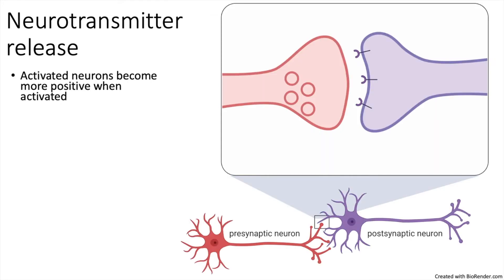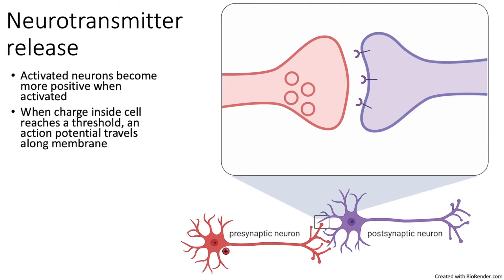Before I describe how this works, I'll give a bit of background starting with the mechanism by which neurons release neurotransmitters. When neurons are not active, they are negatively charged on the inside. When an excitatory neurotransmitter activates receptors on these neurons, positively charged ions flow into the cell and depolarize it. If the depolarization reaches a certain threshold, it triggers an action potential, which is basically a positive charge that moves across the membrane and towards the axon terminal.